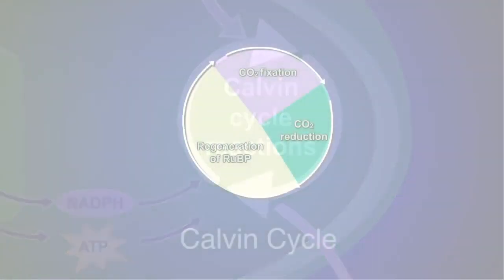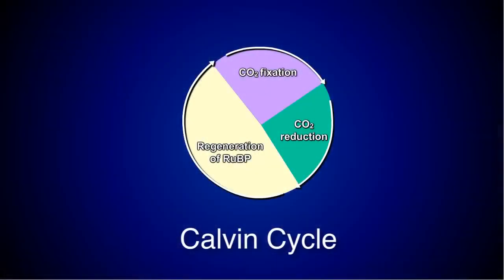Let's zoom into the Calvin cycle to take a closer look. The Calvin cycle could be divided into three phases: carbon dioxide fixation, carbon dioxide reduction, and regeneration of RuBP.